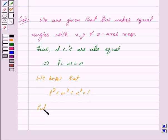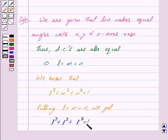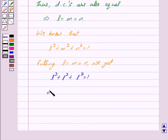Now putting L equals M equals N, we get L square plus L square plus L square equals 1, which implies 3L square equals 1, which further implies L square equals 1 upon 3, and this implies L equals plus or minus 1 over root 3.